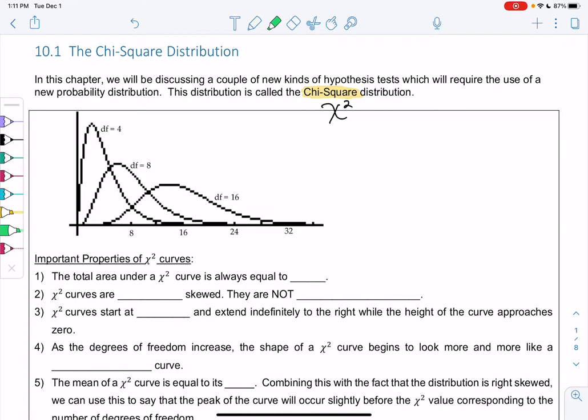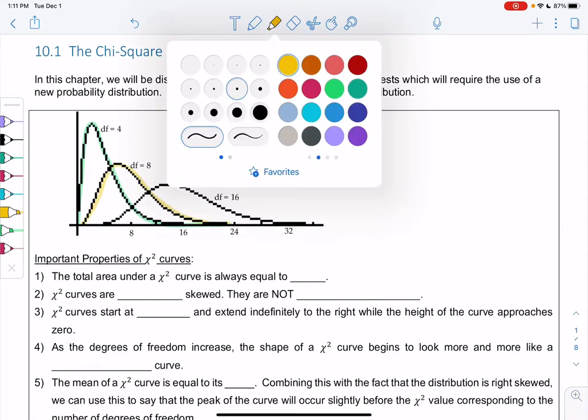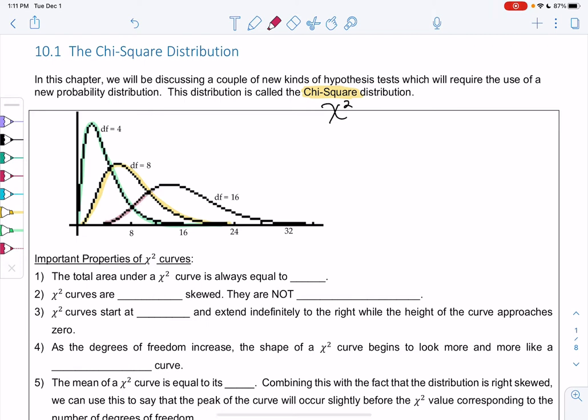So we'll start off with degrees of freedom 4, and you can see it's a little bit right skewed. And then the next one is degrees of freedom 8. It gets a little bit less right skewed. And then as we jump up to 16 and keep going, you'll notice it starts to look a little more and more normal. So let's take a few notes about it and then we'll use the curve.